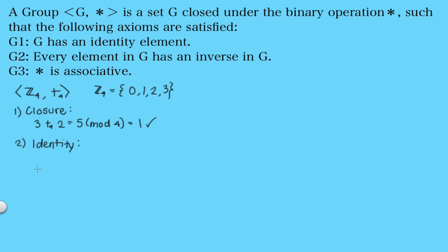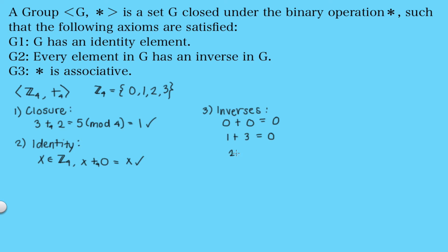The identity element is 0, since for any x in ℤ₄, x plus 0 equals x. For inverses: 0 is its own inverse since 0 plus 0 equals 0; 1 has inverse 3 since 1 plus 3 equals 4, which is 0 modulo 4; 2 is its own inverse since 2 plus 2 equals 4, which is 0 modulo 4; and 3 has inverse 1 for the same reason. So every element in the set has an inverse.